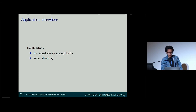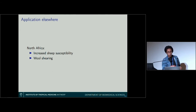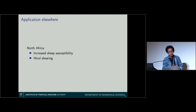There is a second application in North Africa, especially Algeria, where we added the possibility of modeling sheep susceptibility. There it is more sheep than cattle. After wool shearing, sheep are more likely to be bitten by a mosquito than before, so we added this possibility of increased sheep susceptibility, and the model accommodates this.